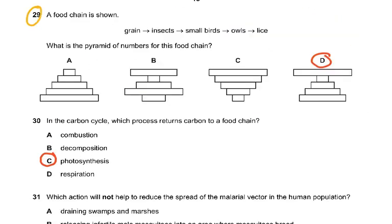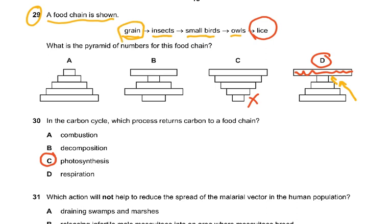Coming on to question 29, a food chain is shown. Grains will have to be the most, then insects will be fewer, then small birds fewer still, then owls even fewer. But then we get lice, which had to be a whole lot bigger in number. The grains had to be more in number because the plants have to be more to support the animals living on them. So the grain is the producer and insects are the primary consumer — that is why the decreasing pyramid was the correct answer.